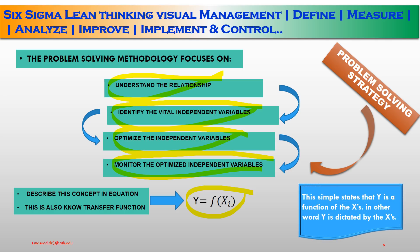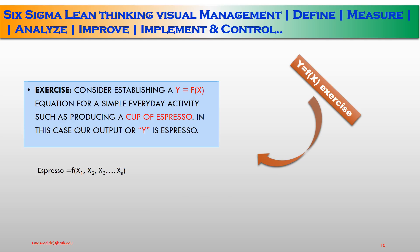On the next slide, we will run one exercise using Y = f(X). This states that Y is a function of the X axis — in other words, Y is dictated by the critical X value. Consider the application of Y = f(X) for a simple everyday activity such as producing a cup of espresso. Espresso T indicates our output Y. So this is my Y value demonstrated as espresso T, which is a function of X1, X2, X3, X4 — different types of coffee inputs. By using Six Sigma technique, I will produce the espresso T that meets the espresso specification.